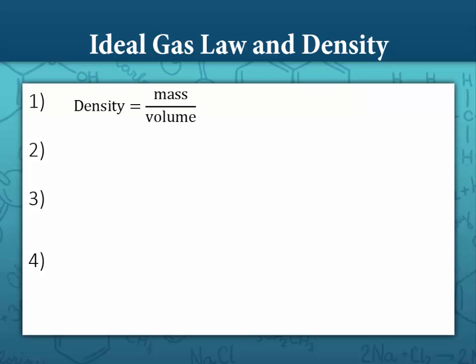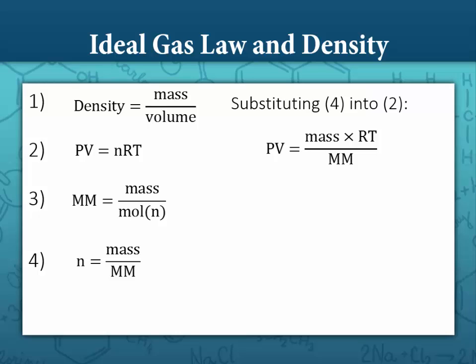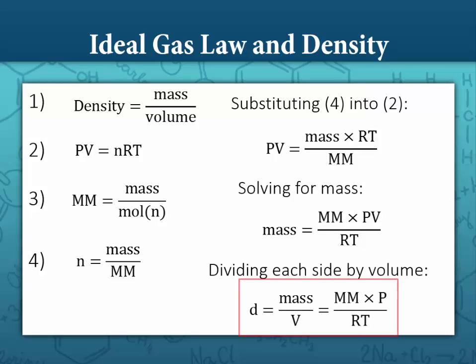To solve for density using the ideal gas law: density is mass divided by volume; PV equals nRT; molar mass is mass divided by moles; and moles equals mass divided by molar mass. Substituting moles as mass over molar mass into PV = nRT gives PV equals mass times RT divided by molar mass. Solving for mass and then dividing both sides by volume, mass over volume — which is density — equals molar mass times pressure divided by RT.